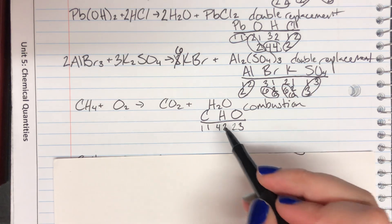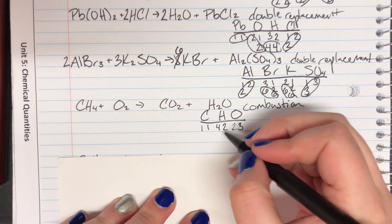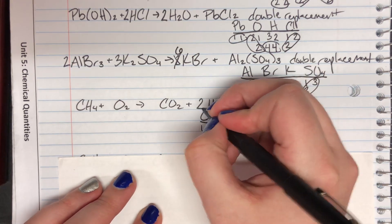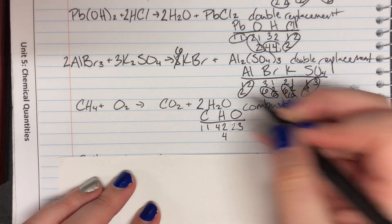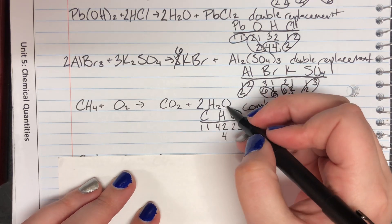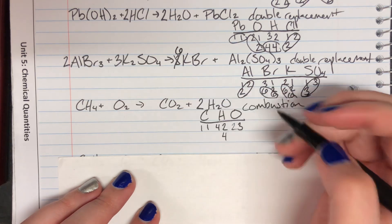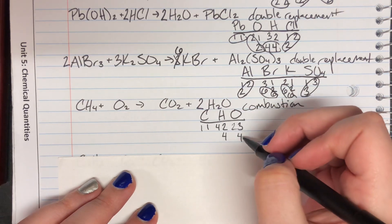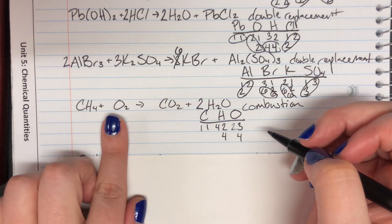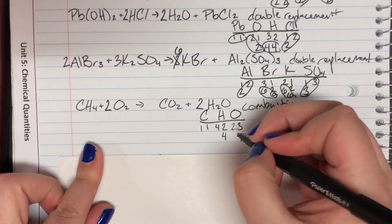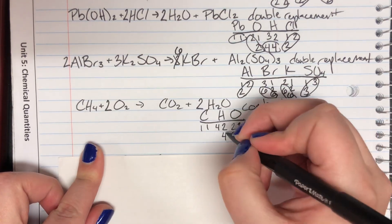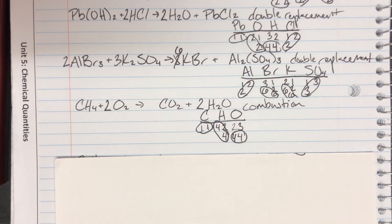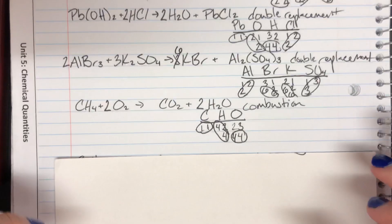I deal with hydrogen before oxygen. I have two on the right and four on the left, so I multiply by two, getting me to four hydrogens. This also affects my oxygen count: two times one is two, plus two, gives me four. Now the only one messed up is oxygen — I have two and I want four. Oxygen is by itself, so I can easily make that adjustment. This was a very easy combustion problem to balance — unique in that way.